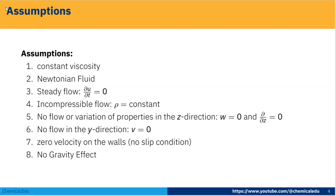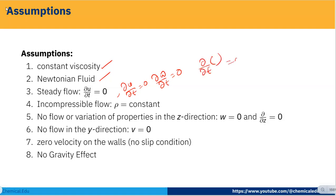Next, we take the assumptions. Assumption 1: constant viscosity. Assumption 2: Newtonian fluid. Assumption 3: steady flow, meaning ∂u/∂t = 0, ∂v/∂t = 0, ∂w/∂t = 0. Assumption 4: incompressible flow, meaning ρ is constant, so ∂ρ/∂t = 0 and ∂ρ/∂x = 0.